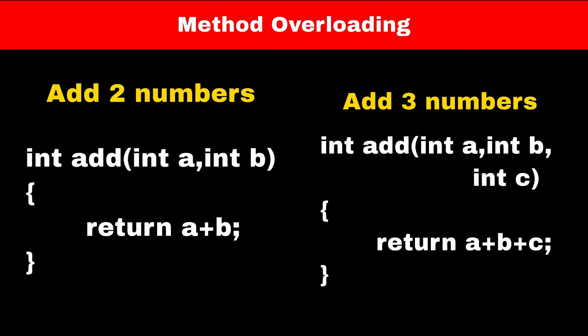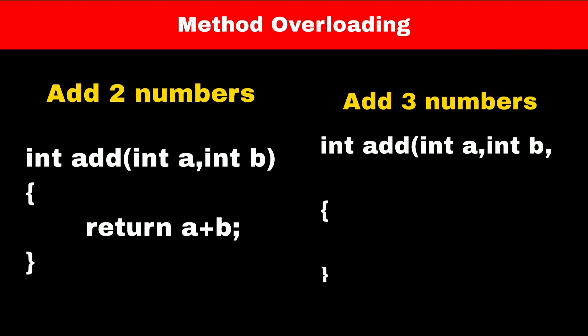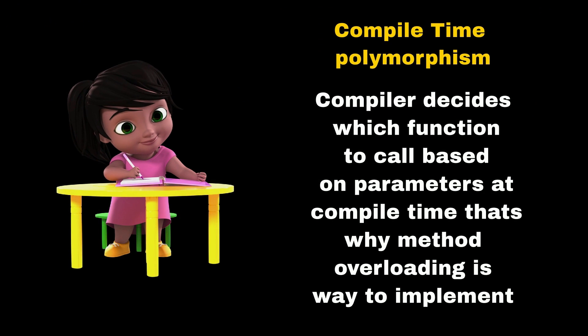So if you want to add three numbers you can just call the function 'add' and pass three parameters to it. Now you can see that we have defined two functions with the same name - this concept is called method overloading. When you call this overloaded function, the compiler will decide which function to call at compile time. That's why this type of polymorphism is called compile time polymorphism.